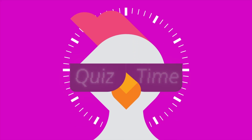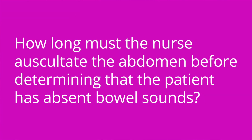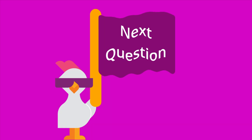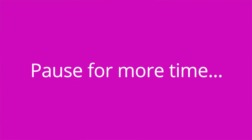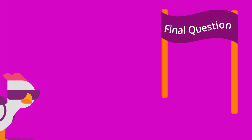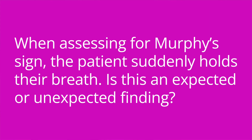Now let's test your knowledge of key facts I provided in this video with some quiz questions. How long must the nurse auscultate the abdomen before determining that the patient has absent bowel sounds? Five minutes. Where is the location of McBurney's point? Two thirds the distance from the umbilicus to the right iliac crest. When assessing for Murphy's sign, the patient suddenly holds their breath — is this an expected or unexpected finding? Unexpected. This could indicate cholecystitis.